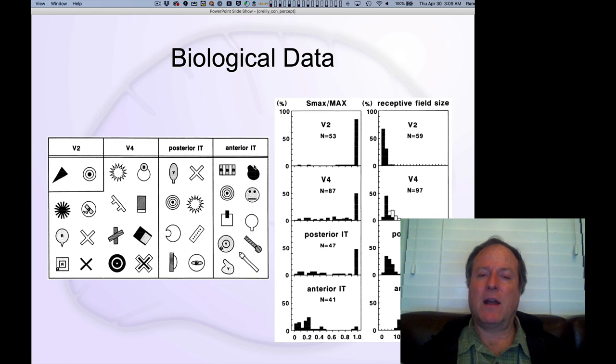This is showing you the progression of different complexities of neural responses as you go up the hierarchy from V2 to V4 to the posterior and then finally to the anterior part of infratemporal cortex. By looking at this you can see that the neurons are responding to more complex kinds of features.